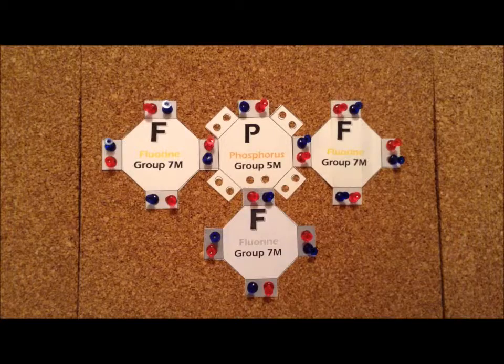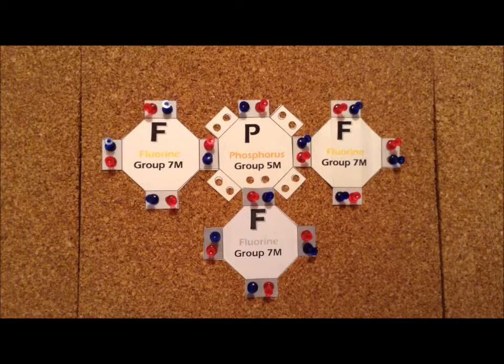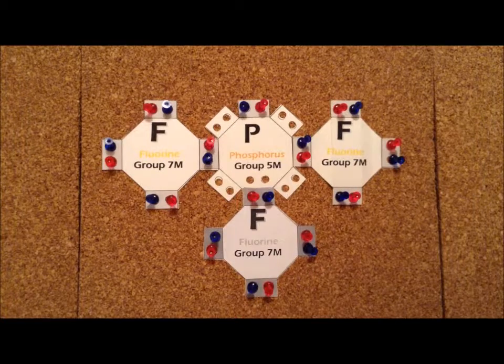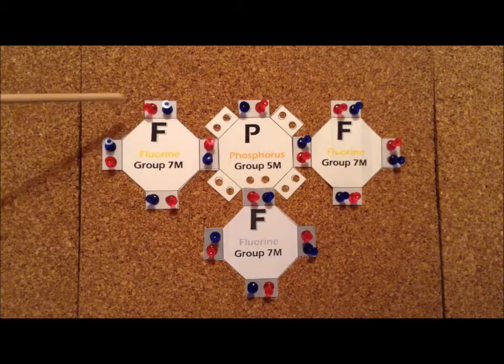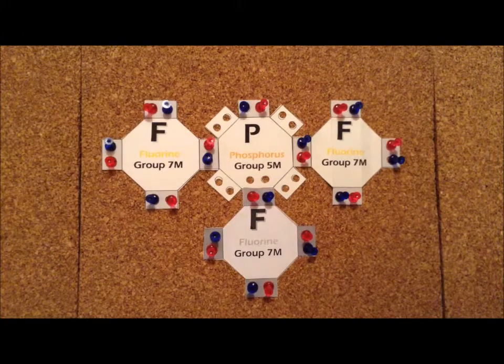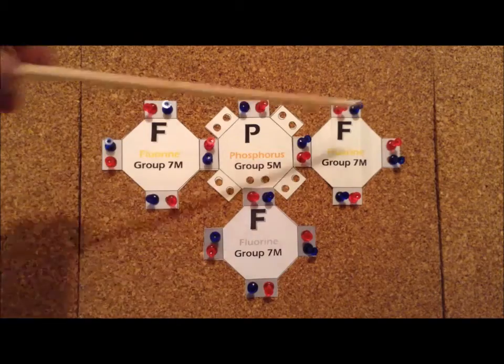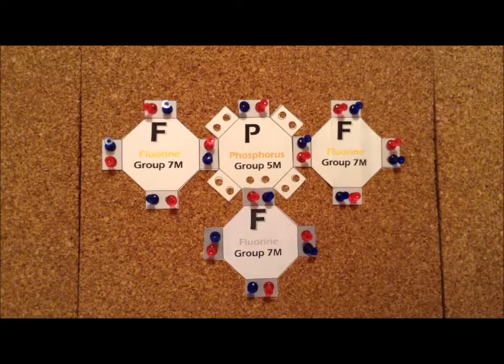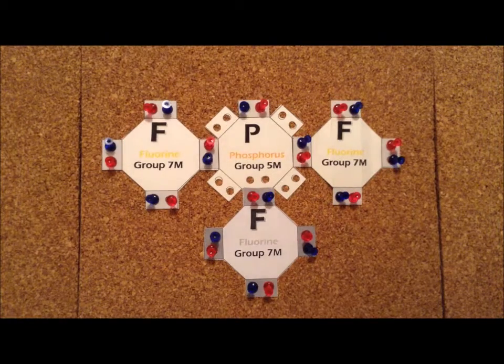Therefore, we need a total of 26 electrons for this particular species. Now, allocating the electrons around the fluorines, we have eight, eight, and eight. So that's 24. We need two additional electrons, that's 26, and those are in a lone pair on the phosphorus.